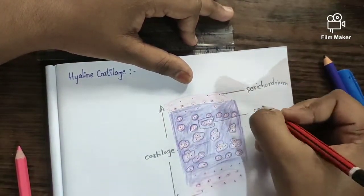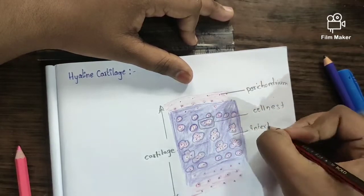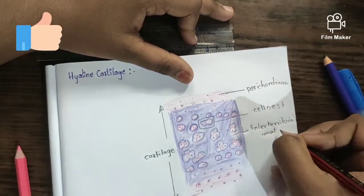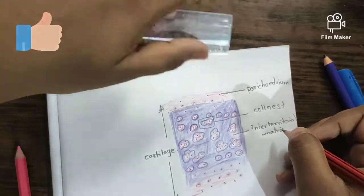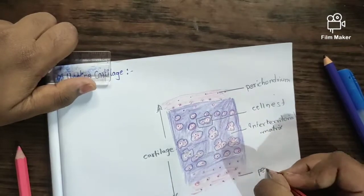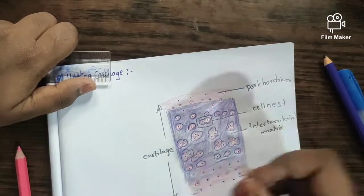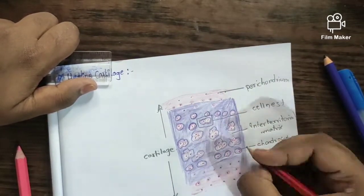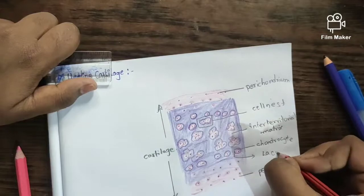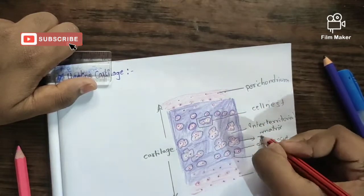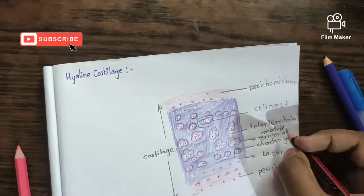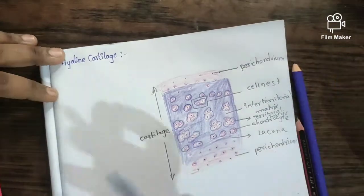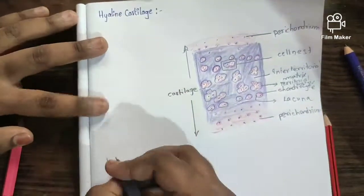The outer layer is lined by perichondrium, and we have cell nests. Between these cell nests we have interterritorial matrix — sorry, territorial matrix. And outlining the chondrocyte is the territorial matrix.